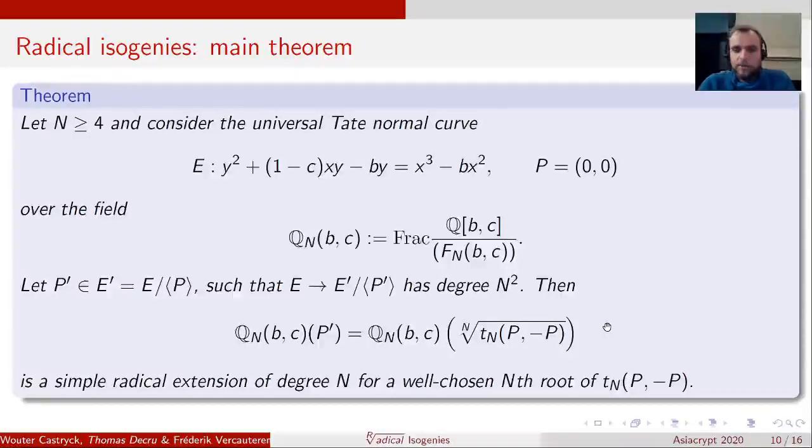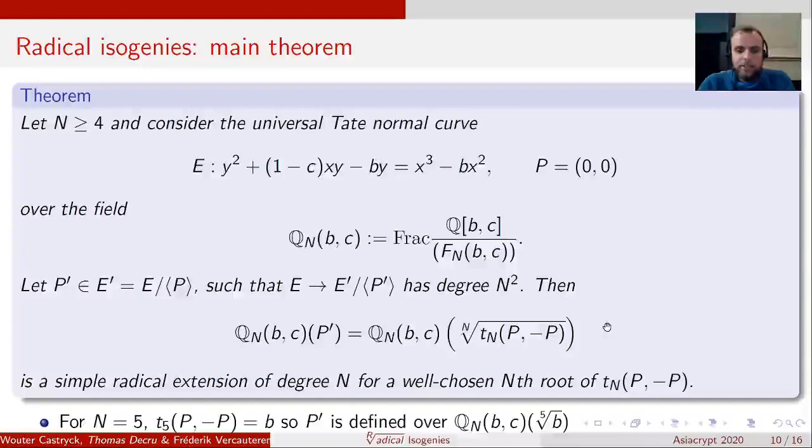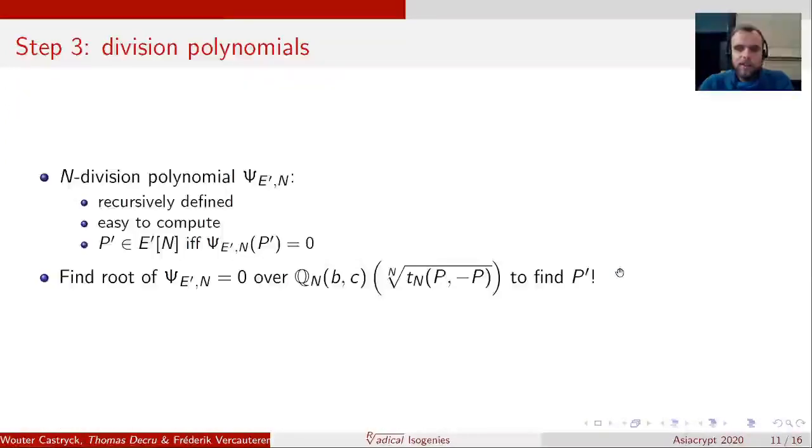We'll not give the proof, but we'll continue the example of N equals 5. For N equals 5, the Tate pairing is simply B in the parameter of the Tate normal form. So P prime is defined over the base field where you adjoin a fifth root of B.